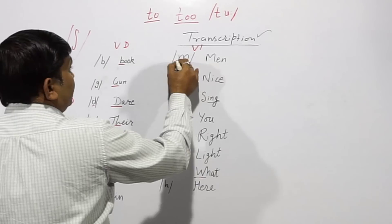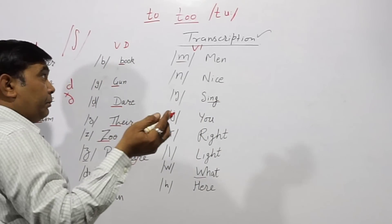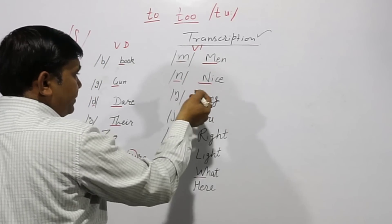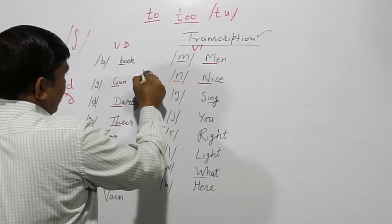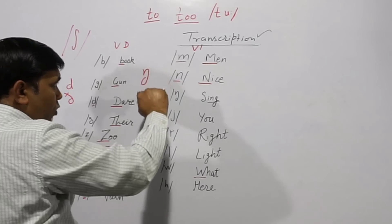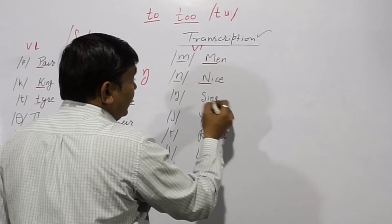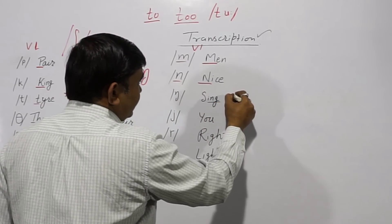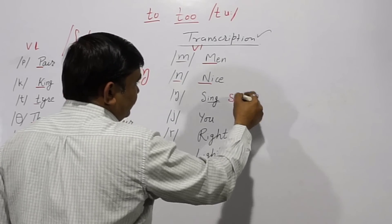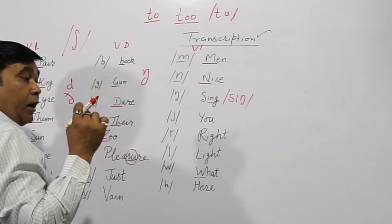Next — these are nasal sounds. /m/ — small m type symbol — as in 'men'. /n/ — small n type symbol — as in 'nice'. And this one, written like a small n but going down with a bend — this is /ŋ/ — as in 'sing'.